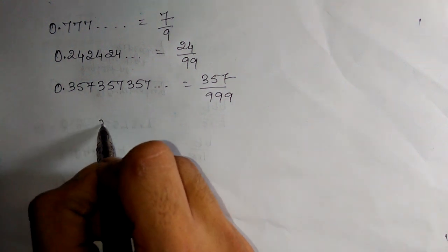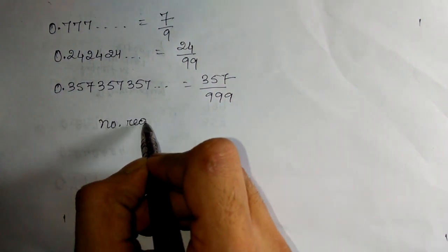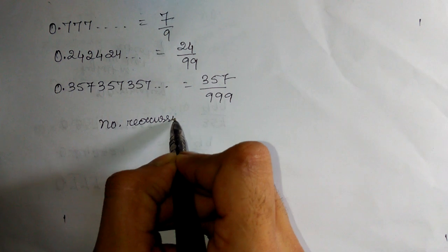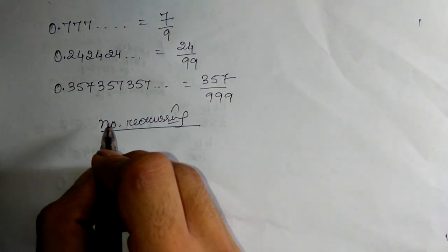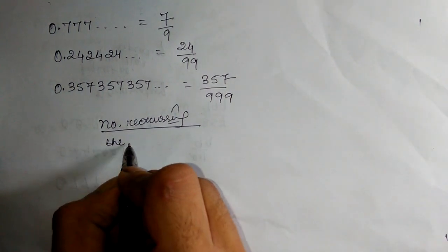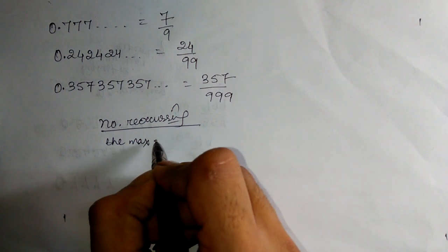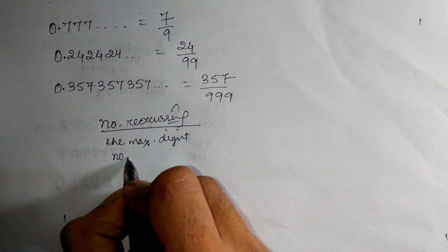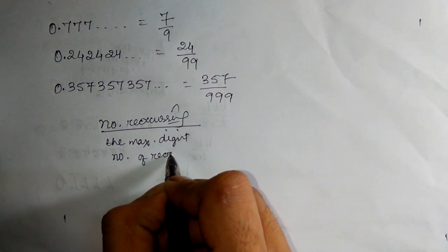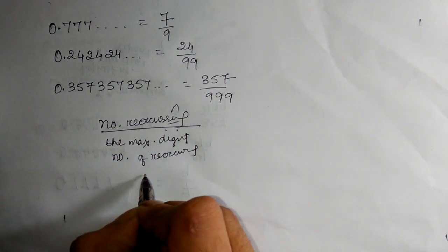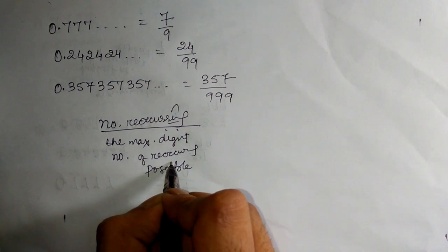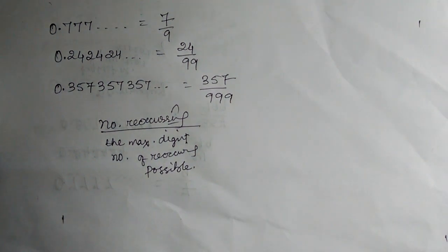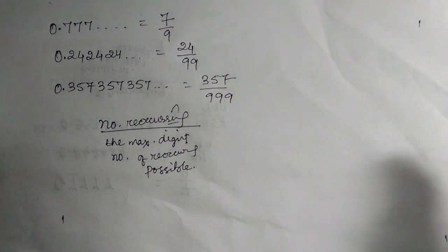So we will generate a formula: the fraction equals the repeating number over the maximum digit number of the reoccurring digits possible. This is the formula, and now we will see how it came — we will solve it thoroughly.